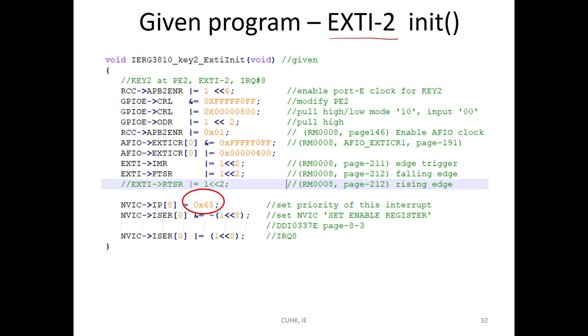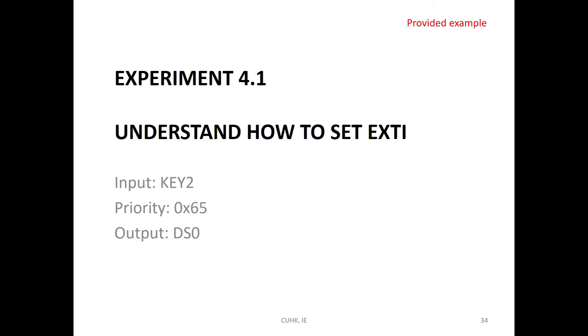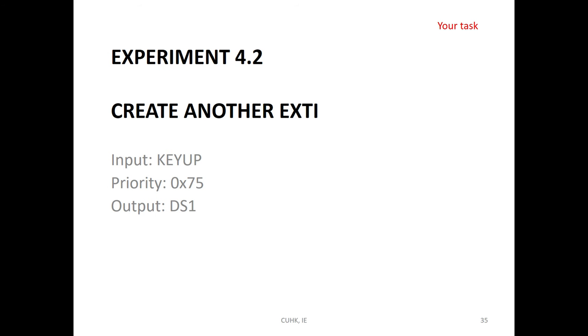We will set the EXTI 2. I set the priority is 65. The key up in the experiment, now we set the key, 65, and control output LED DS0. And you create another external interrupt handler. The key up, set 75 and control the DS1.